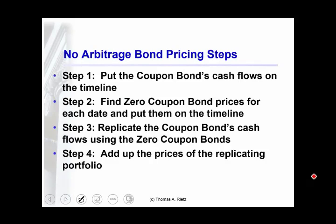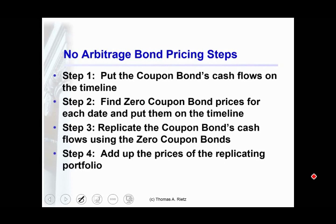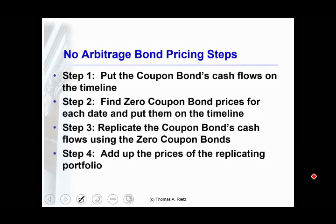The first thing you do is find a coupon bond that has payments at different points in time and put the cash flows on the timeline. Then you look up the prices of zero coupon bonds, one for each of the dates that the coupon bond has a cash flow. Then you replicate the cash flows of the coupon bond using the zero coupon bonds. Finally, add up the prices of the replicating portfolio to get the value of the coupon bond today.